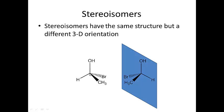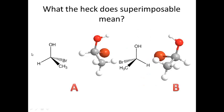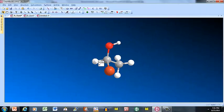The carbon is sp3 hybridized, and if we look at the mirror image we can say it is non-superimposable. What does non-superimposable mean? When you make all the atoms point in the same direction, they don't overlap. Here's molecule A and here's its mirror image B. In the 3D version of A, hydrogen is here, bromine is the big orange atom, CH3 is here, and OH is up top. In the mirror image B, bromine, CH3, and OH are rearranged.